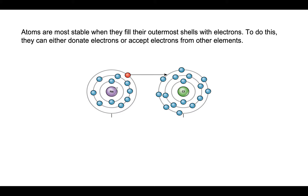Let's take a look at sodium and chlorine. In sodium, there are two electrons in the first shell, eight in the second shell, and one electron in the last shell. For sodium to be in its most stable state, you'd think it needs seven more electrons — but that takes a tremendous amount of energy.